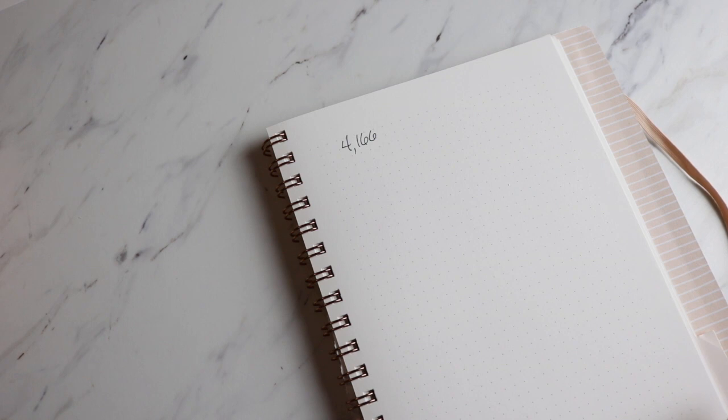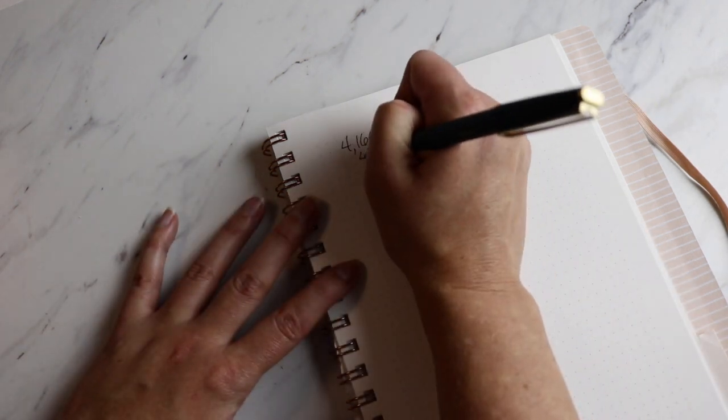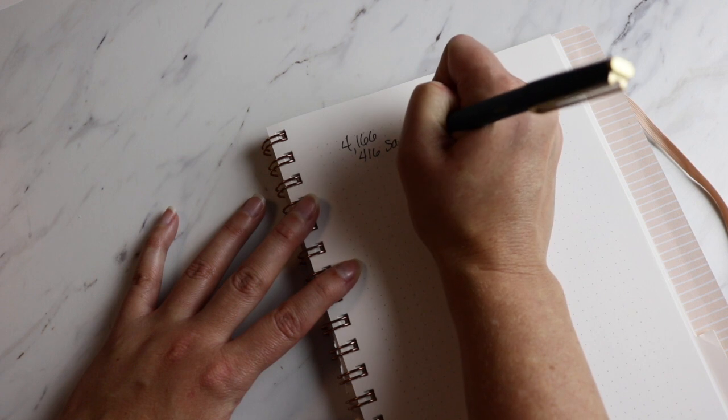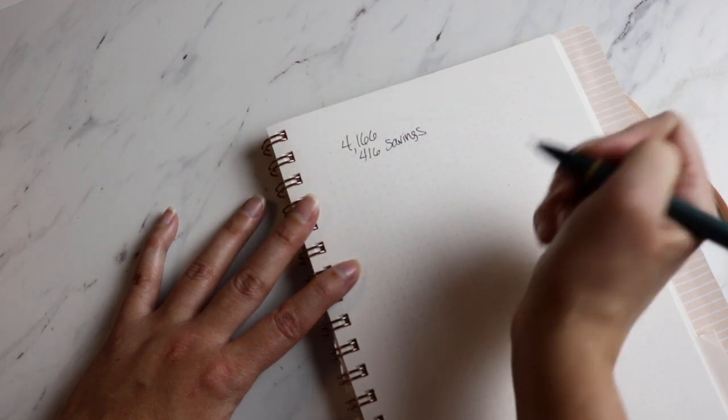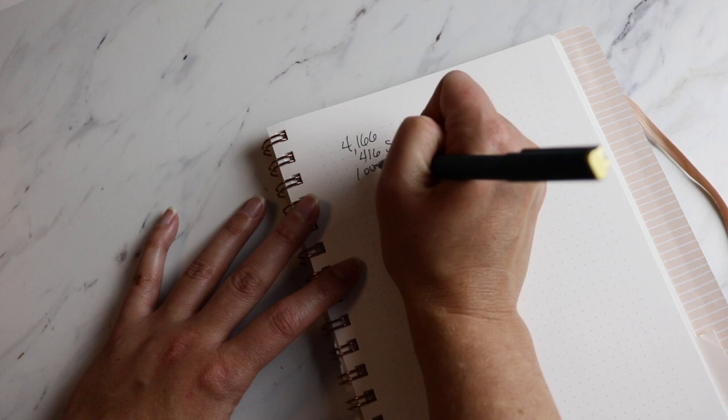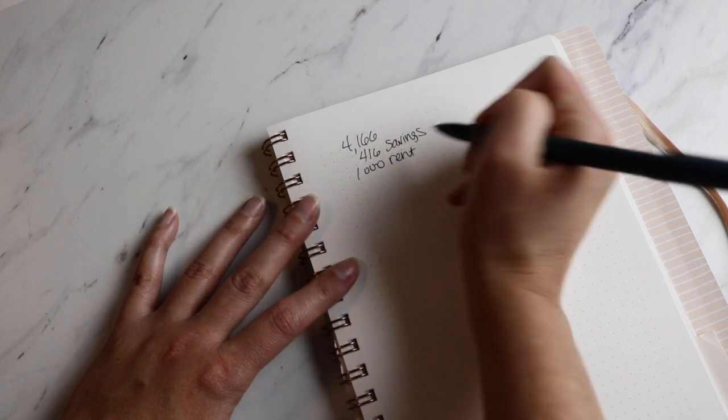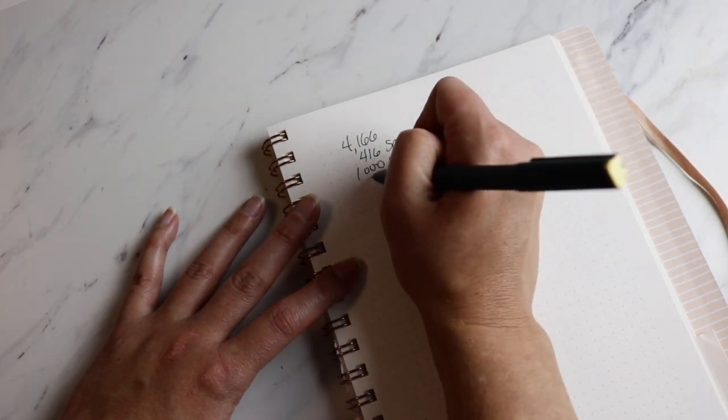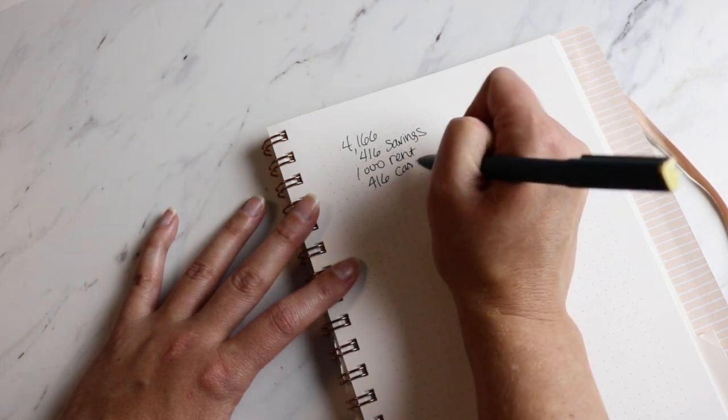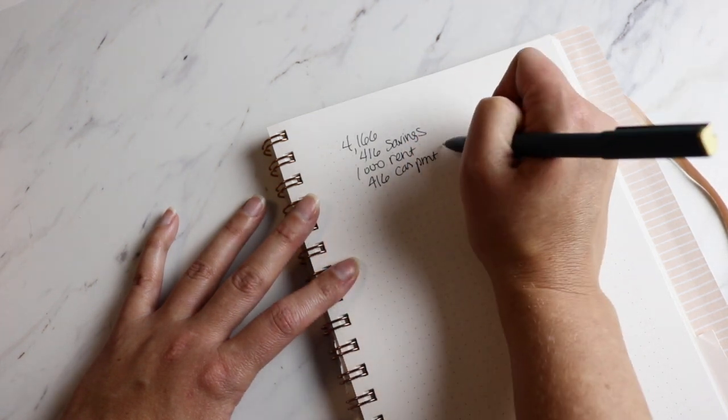I always recommend budgeting every single time that you receive income coming in. But I want to do this on a monthly look so that you can see how much money you actually have left after you have paid bills. In this scenario, we're going to start with savings, then pay rent of $1,000. Our car payment is $416 and that is including insurance.